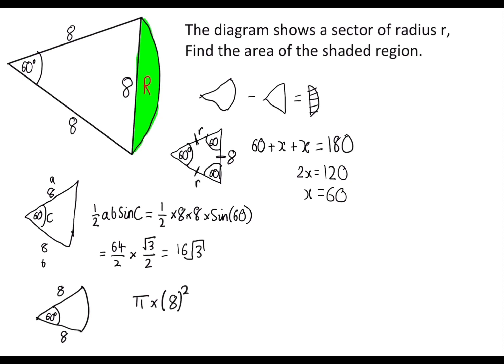However, we don't have a full circle. We have 60 degrees of a full circle. So we have 60 degrees out of a full circle, which would be 360 degrees. So we're going to have that much of the circle. So if we simplify this, we're going to get 64 pi times 1 over 6, which is 32 pi over 3.